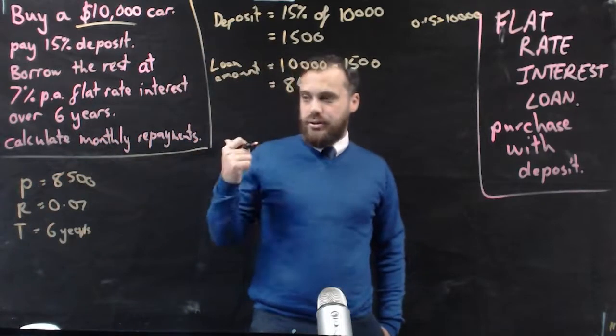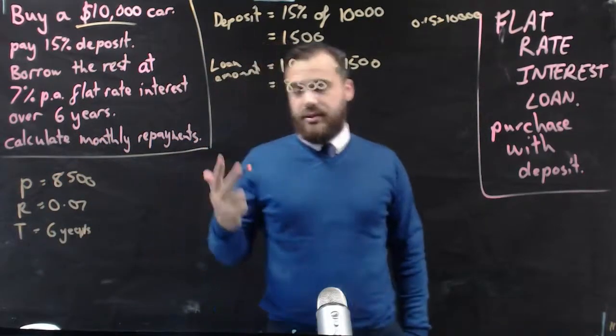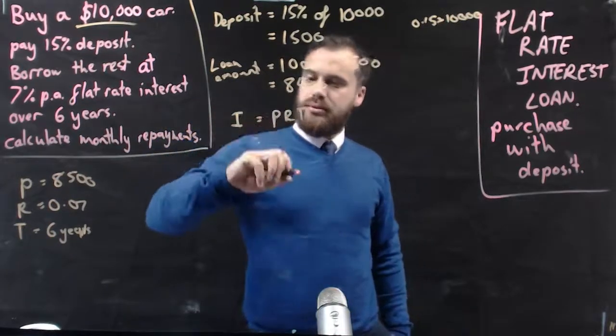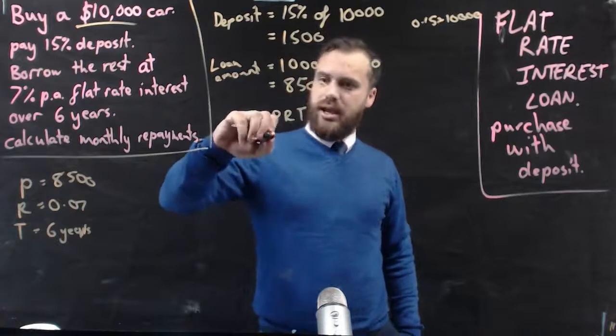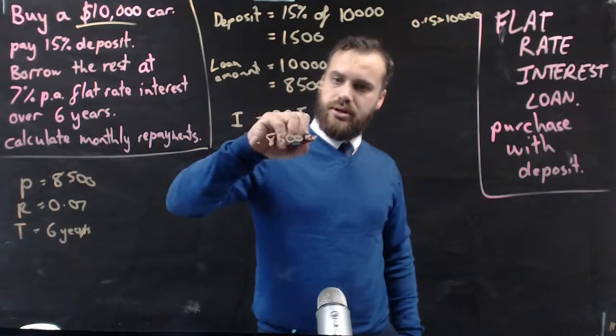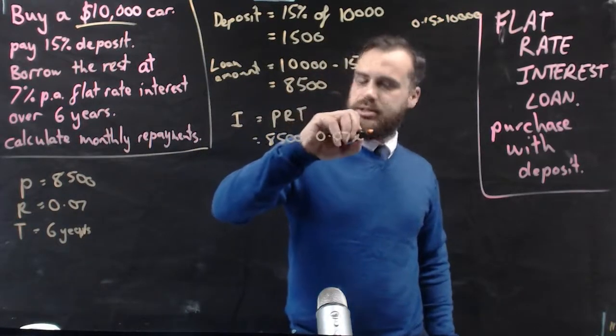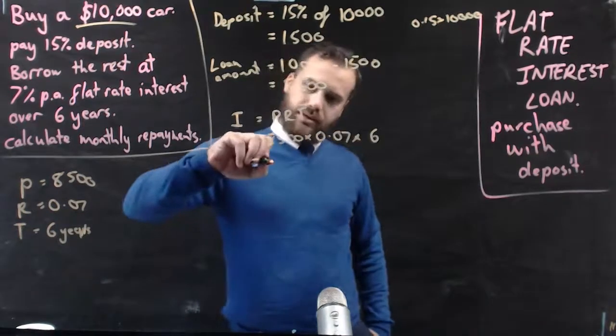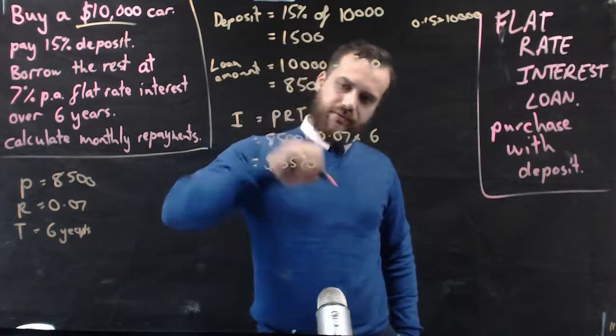Okay, so if I know the P, the R, and the T, I can find the interest amount on this loan. Okay, so that's $8,500 times 0.07 times six. I'm going to put that in my calculator. And that gives me $3,570.